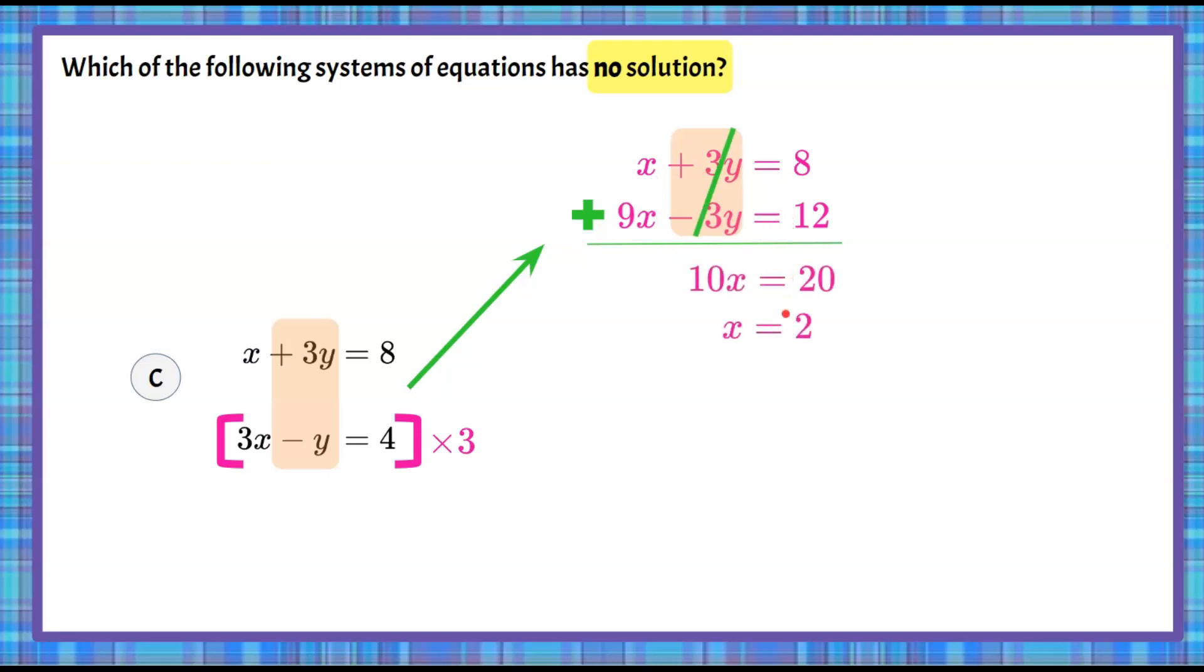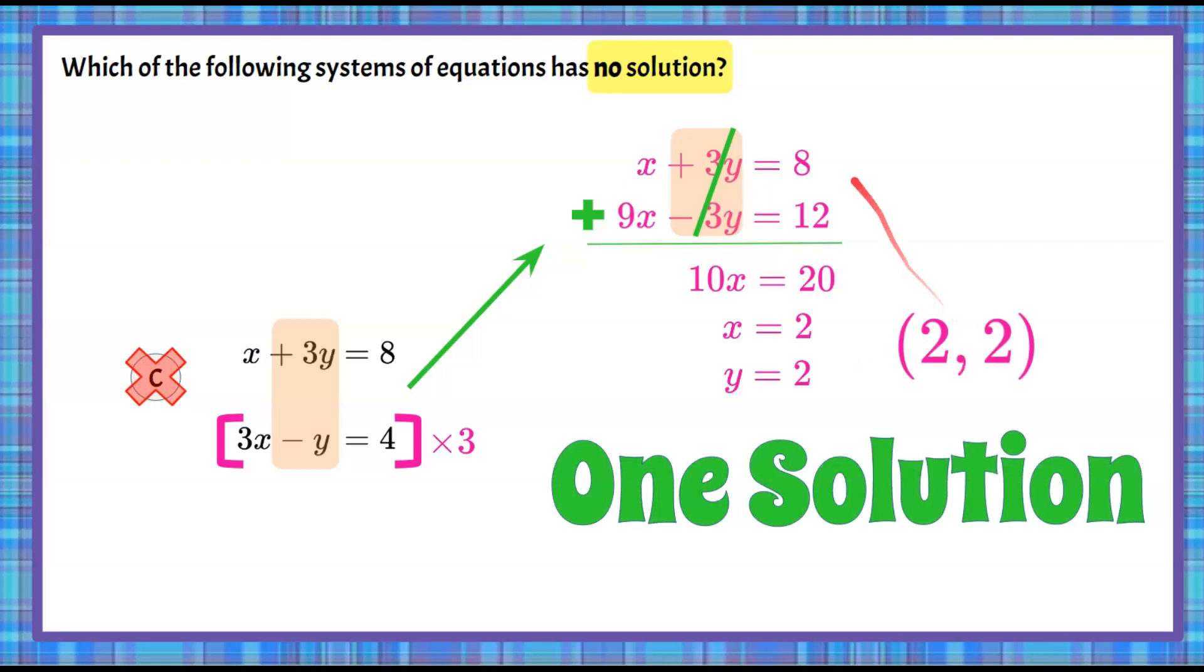Divide both sides by 10, and we get that x is equal to 2. We'll plug 2 back into that first equation, and we're going to get that y is also equal to 2, giving us again one solution, the ordered pair 2, 2. This system will intersect at that point.